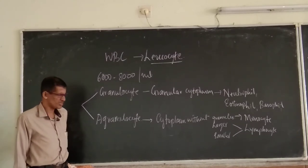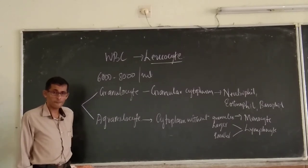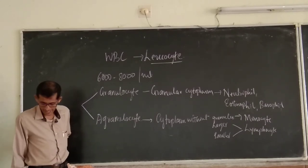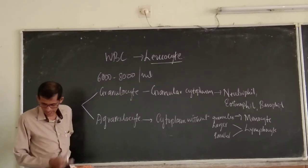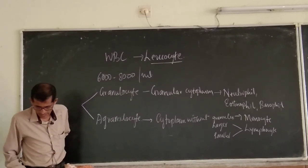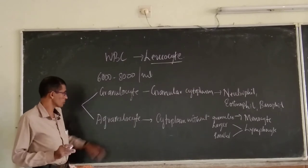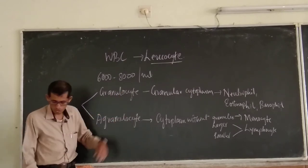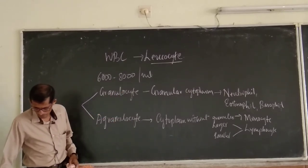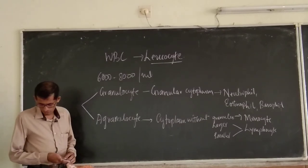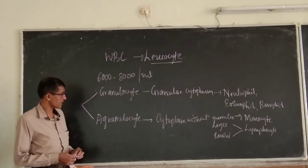Neutrophil has a 5 to 7 lobed nucleus, sometimes called multilobed. Monocyte has a kidney-shaped nucleus, and basophil has an S-shaped nucleus.